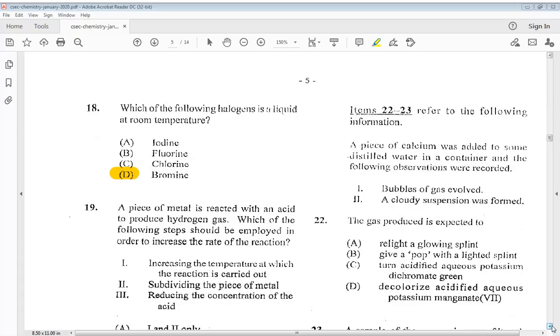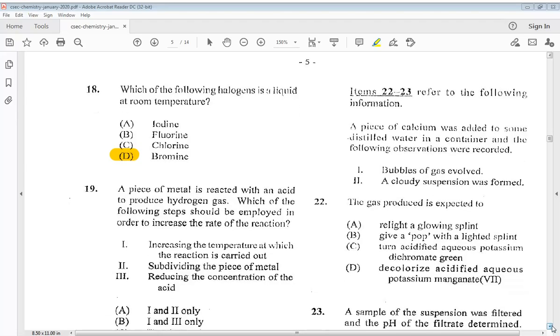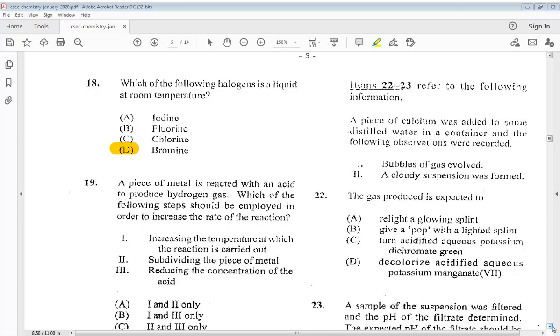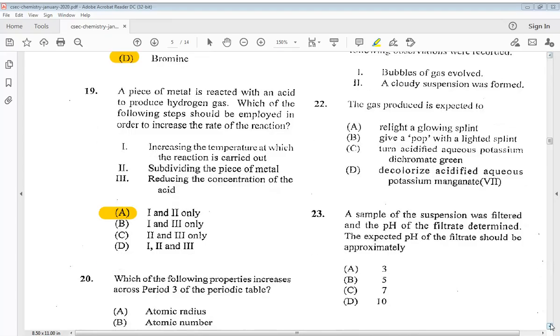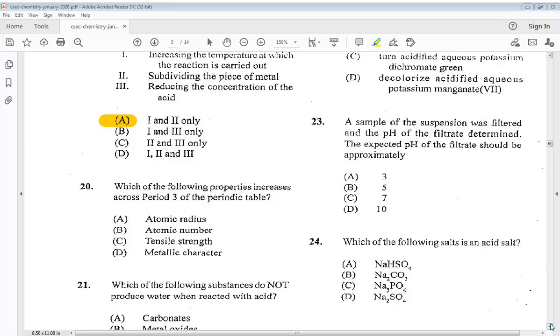Let's move on to number 19. A piece of metal is reacted with an acid to produce hydrogen gas. Which of the following steps should be employed in order to increase the rate of the reaction? A. 1. Increasing the temperature at which the reaction is carried out, 2. Subdividing the piece of metal, 3. Reducing the concentration of the acid. So it would be 1 and 2 only, A. Let's move on to number 20. Which of the following properties increases across period 3 of the periodic table? A. Atomic radius, B. Atomic number, C. Tensile strength, or D. Metallic character. So the answer is B. Atomic number.